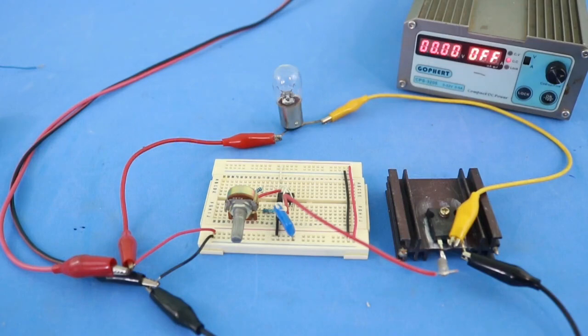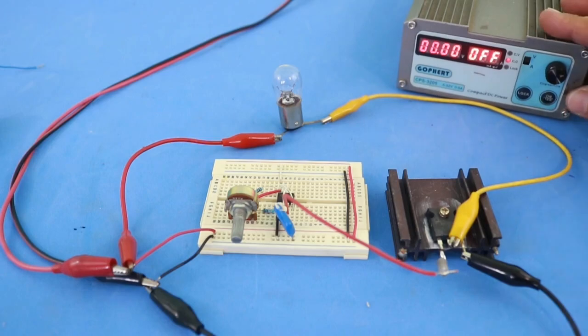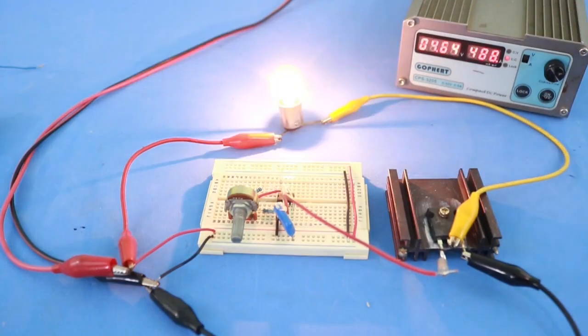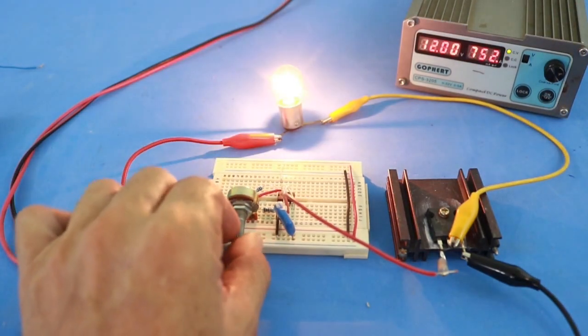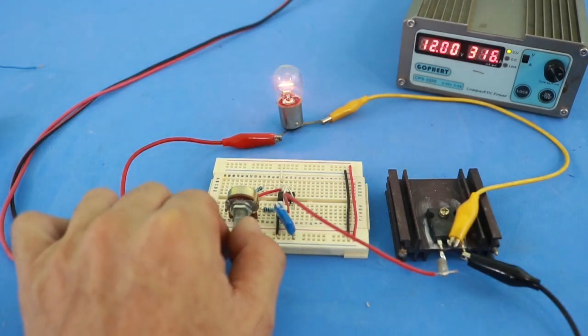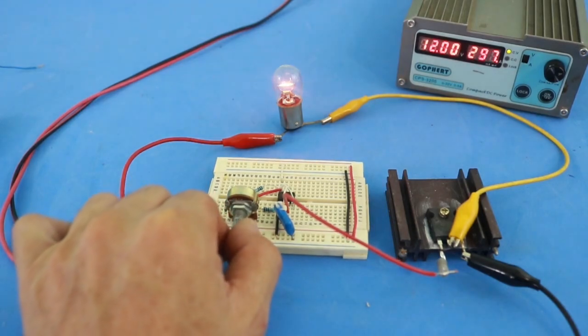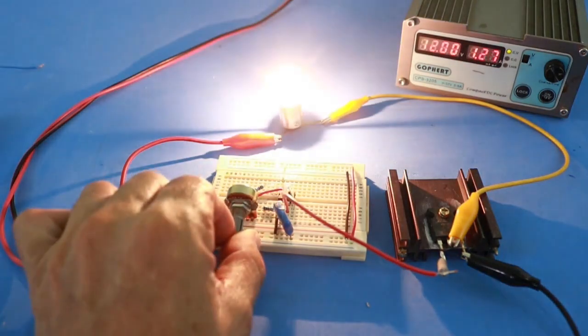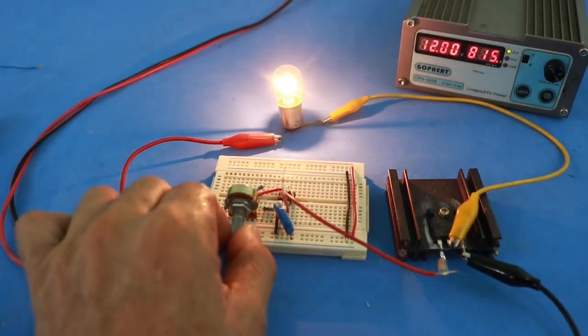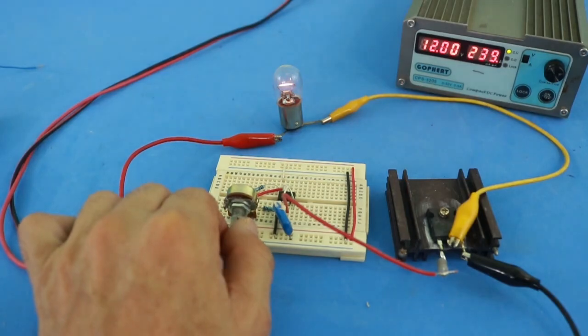Okay, so here is the circuit connected as in the diagram. Let me turn on the power supply, and let's see, we move the potentiometer and the brightness of the lamp changes. Maximum brightness to almost off.